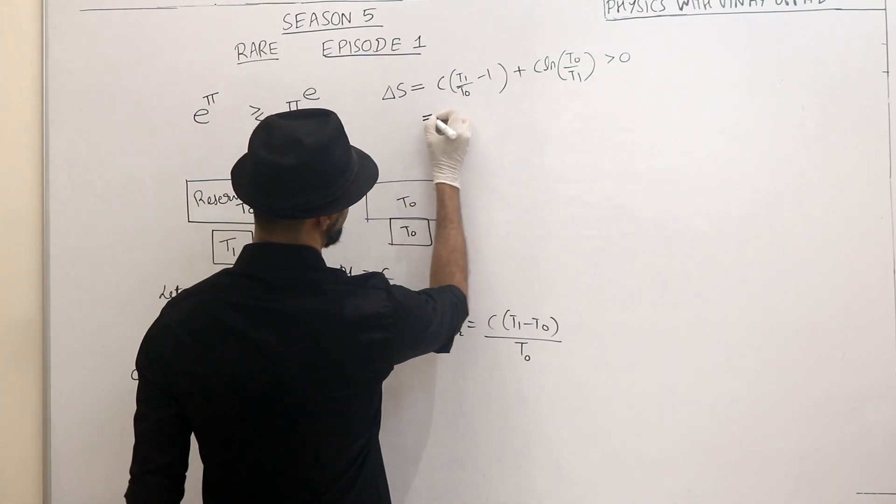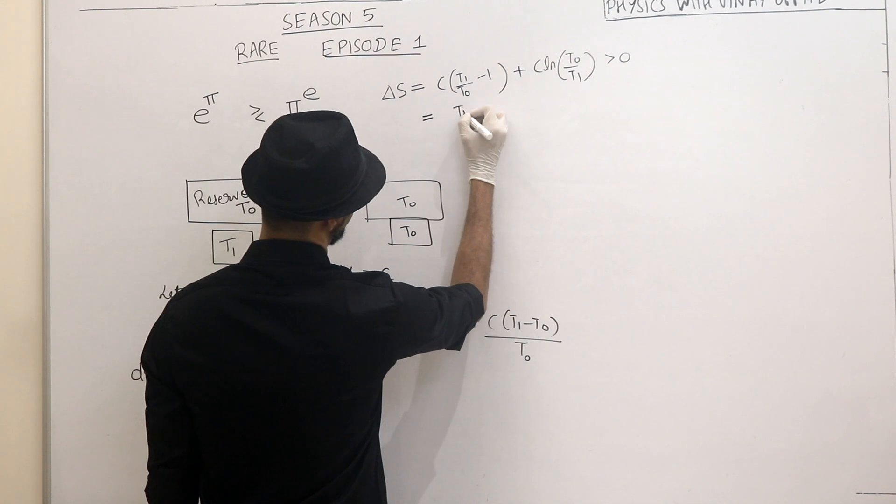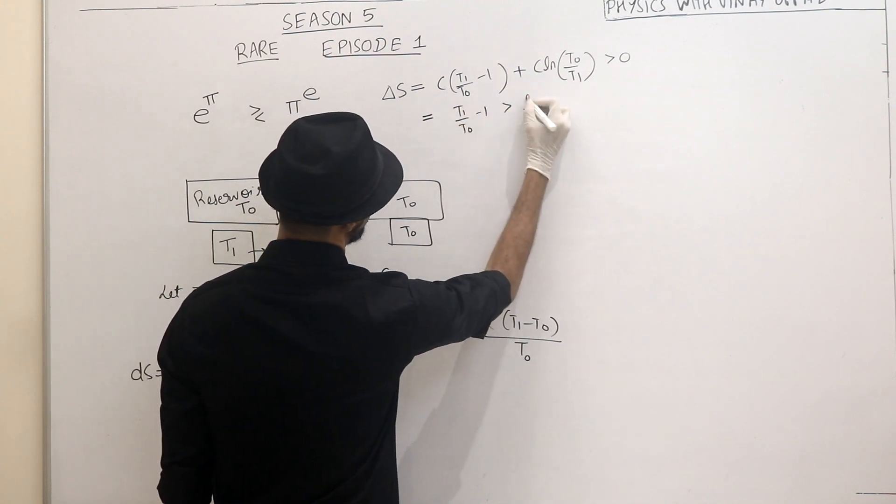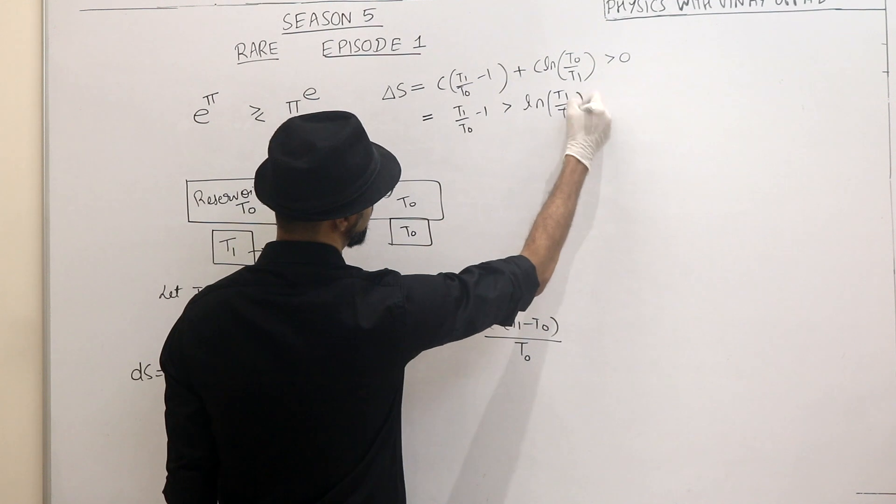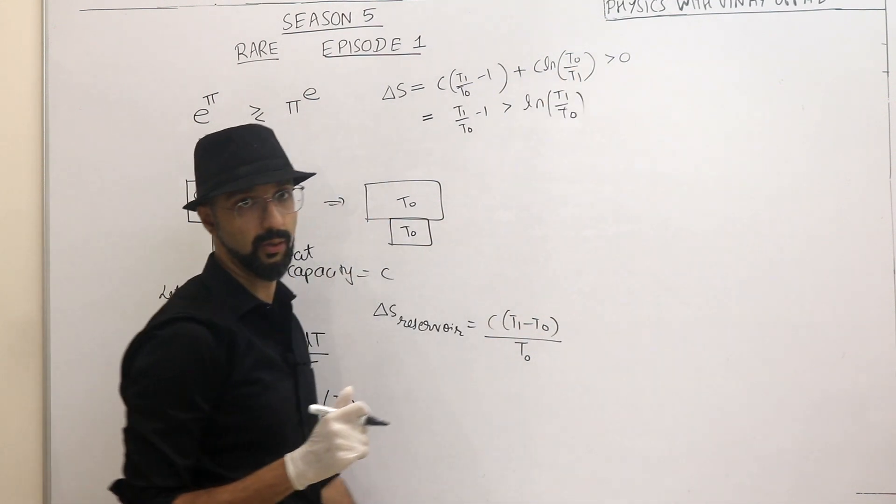So this thing is also C. So I can say T1 by T0 minus 1 is greater than ln of, right hand side put a negative sign inside, T1 by T0.